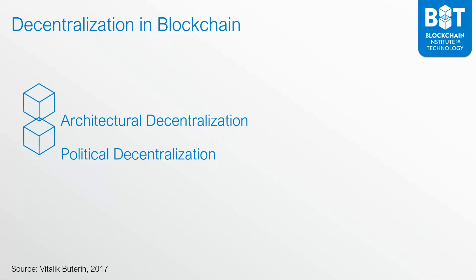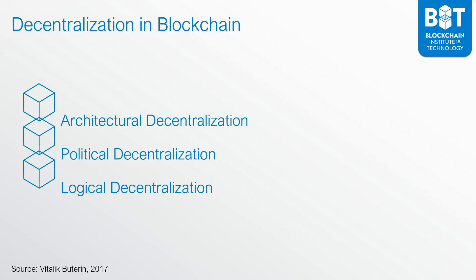That brings us to the next type of decentralization, which is logical decentralization. In this context, the question is: do all these different computers have the same exact purpose? In the context of Bitcoin, Bitcoin is not logically decentralized. Why? Because the entire Bitcoin network serves a common goal — it is the Bitcoin network, a peer-to-peer electronic cash system. A great way to look at what logical decentralization means is that if you take the entire network and split it in half, the rest of the network will still be able to run doing exactly the same thing, because the entire network shares a common goal. And that is the three types of decentralization as they apply to blockchain.